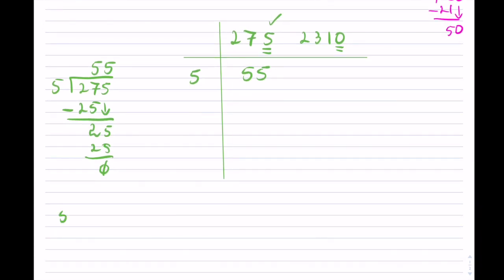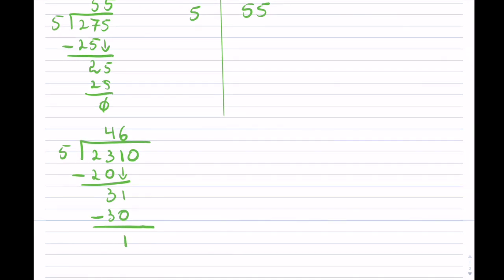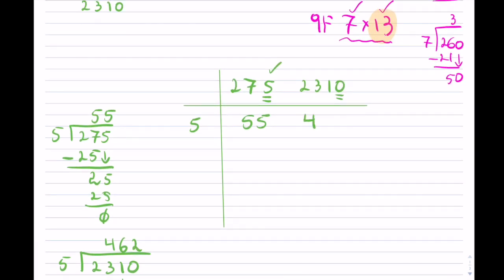Now checking 5 into 2310: 5 into 23 goes 4 times giving 20, subtract to get 3, bring down 1 — 5 into 31 goes 6 times giving 30, subtract to get 1, bring down 0 — 5 into 10 goes 2 times. So I have reduced this to 55 and 462.